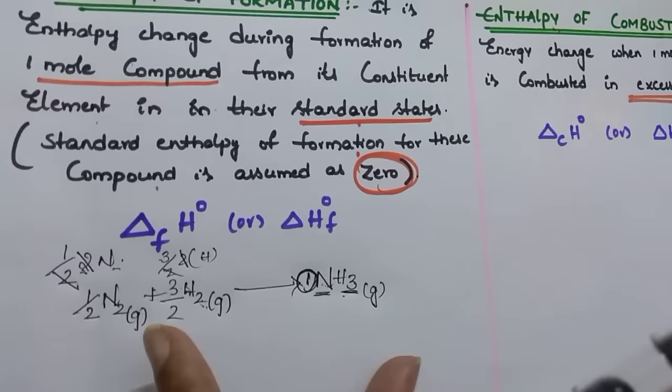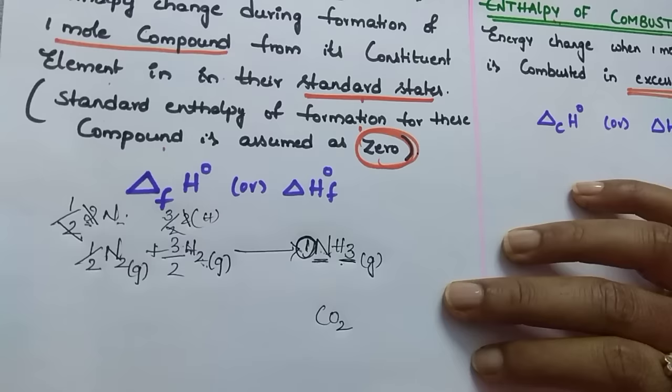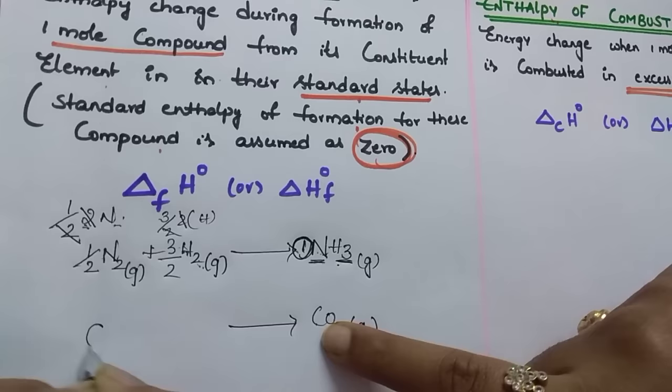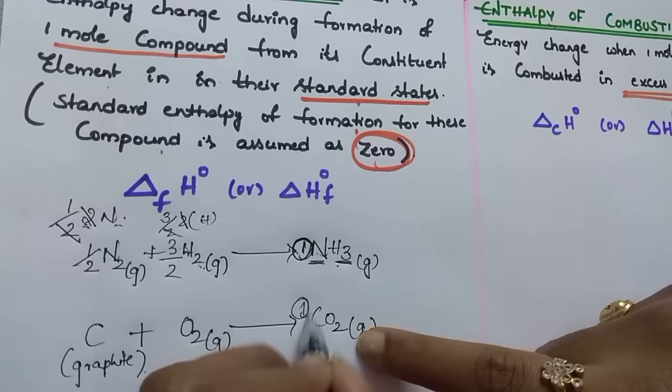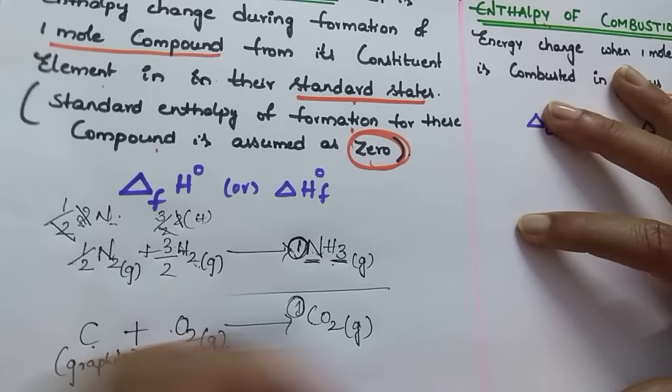For the formation of one mole of CO₂: write CO₂ on the product side. The elements are carbon and oxygen. Standard state of carbon is graphite, and oxygen is O₂ gaseous. One mole of CO₂ means one carbon and two oxygens, so the equation is C(graphite) + O₂(g) → CO₂(g). Learn to write formation reactions with different examples.